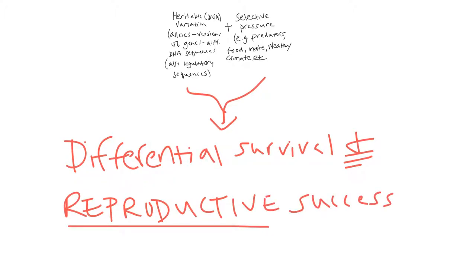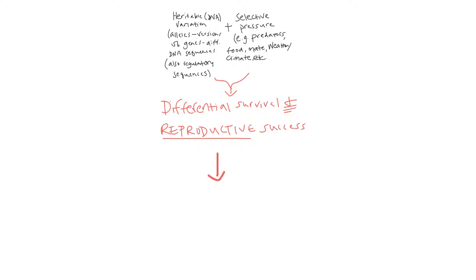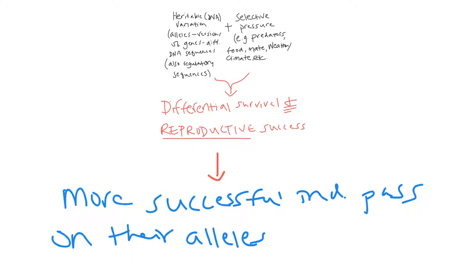The combination of heritable variation and selective pressure leads to differential survival and, most importantly, differential reproductive success — meaning that some individuals in the population survive and reproduce more successfully than others. The more successful individuals pass on their alleles more often than those that are not surviving and reproducing as successfully. All organisms pass on genes; they just have different versions of those genes or different regulatory sequences.